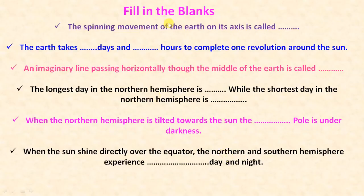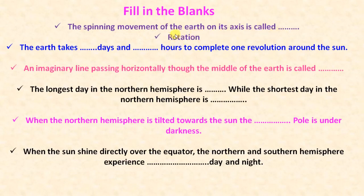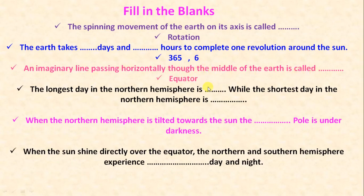Now fill in the blanks. The spinning movement of the earth on its axis is called rotation. The earth takes 365 days and 6 hours to complete one revolution around the sun. An imaginary line that passes horizontally through the middle of the earth is called the equator.